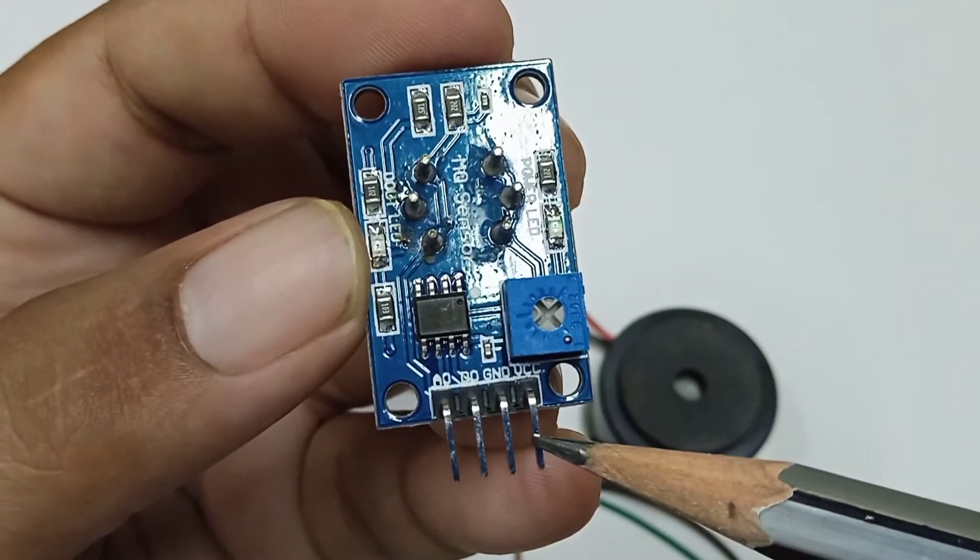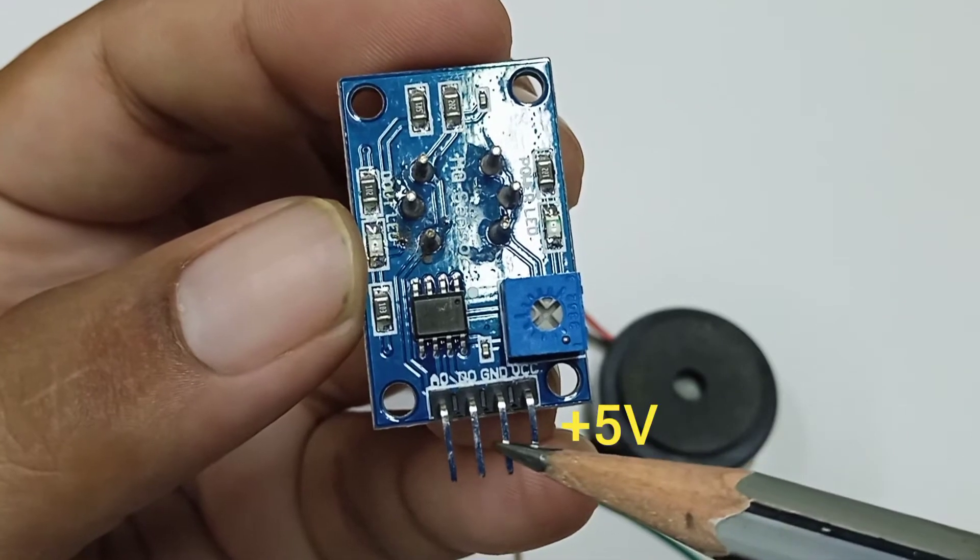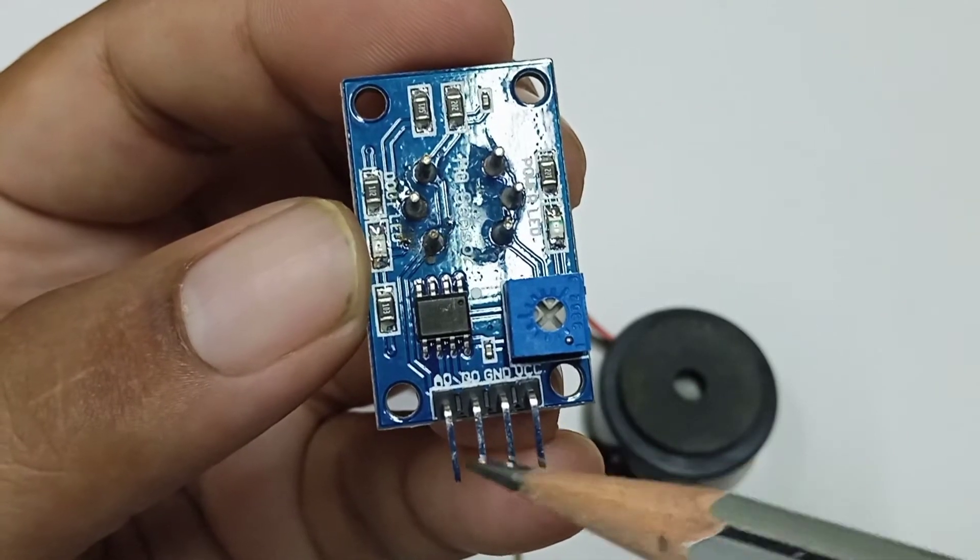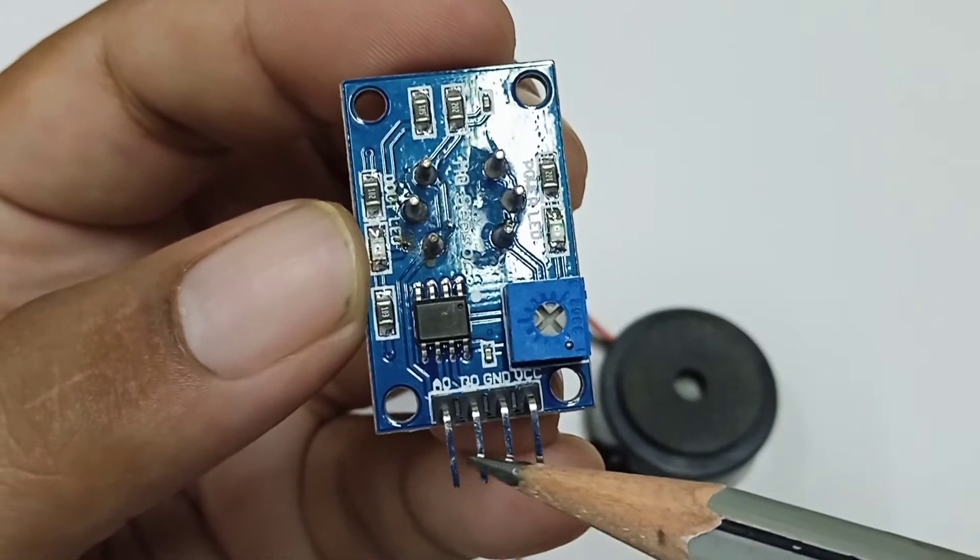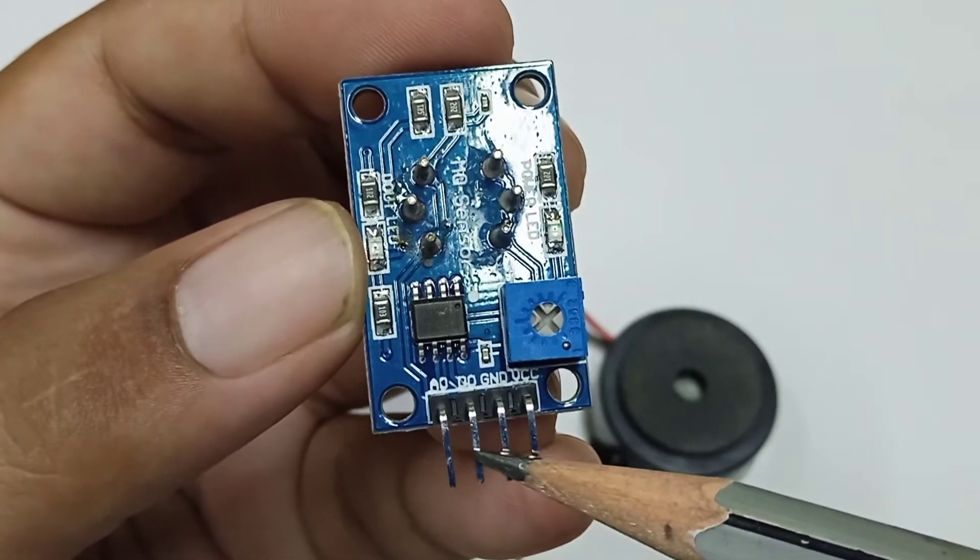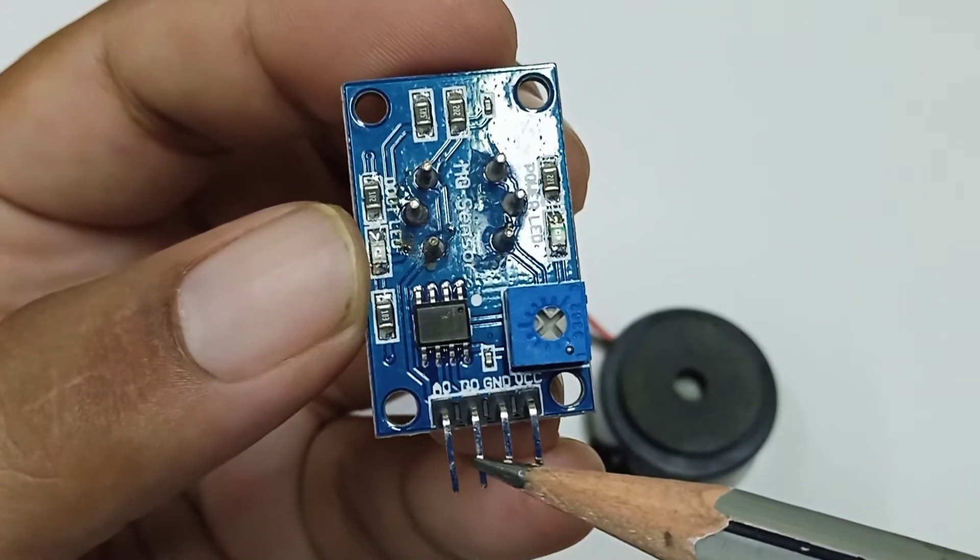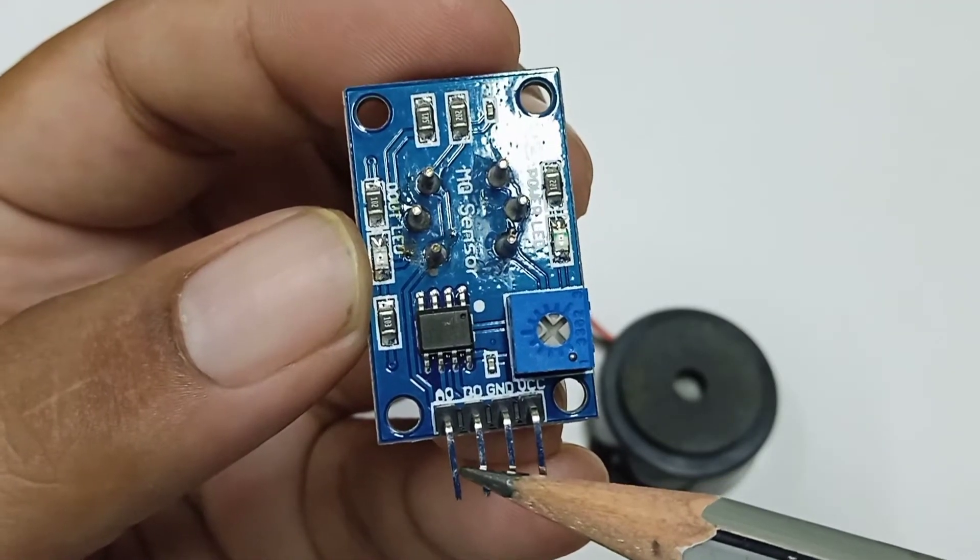So in VCC we have to provide plus 5 volts, here provide the ground, and here at D0 you will directly connect a low current output load like a buzzer or LED and you can verify the output. So let's do the connection.